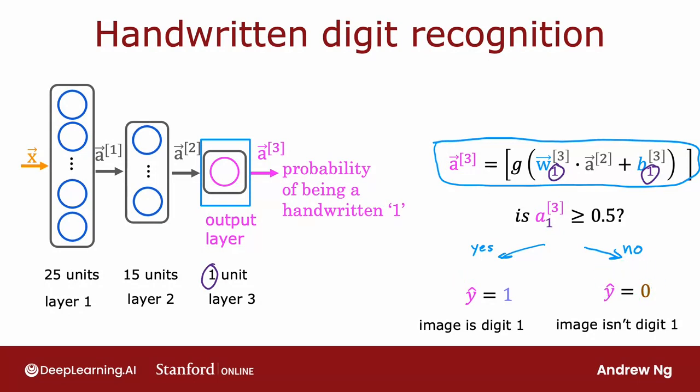So the sequence of computations first takes x, and then computes a1, and then computes a2, and then computes a3, which is also the output of the neural network. So you can also write that as f of x. So remember when we learned about linear regression and logistic regression, we use f of x to denote the function computed by the neural network as a function of x.